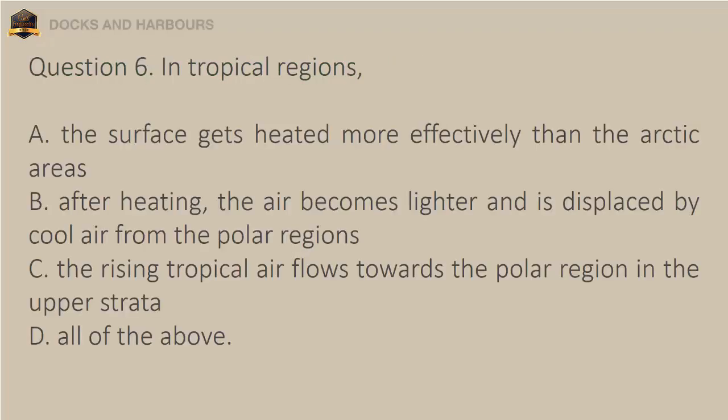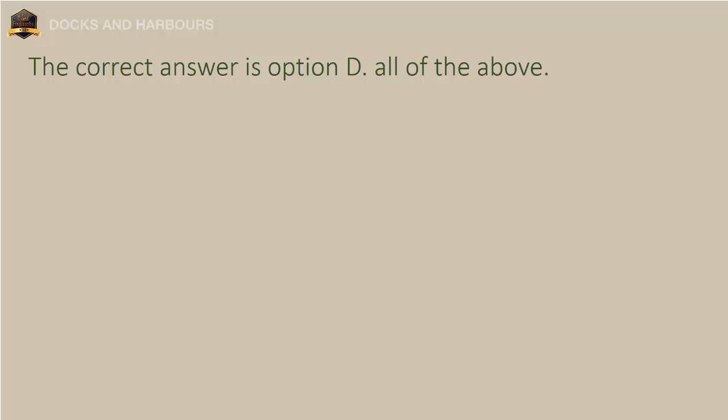Question 6. In tropical regions: A. The surface gets heated more effectively than the Arctic areas. B. After heating, the air becomes lighter and is displaced by cool air from the polar regions. C. The rising tropical air flows towards the polar region in the upper strata. D. All of the above. The correct answer is Option D: All of the above.